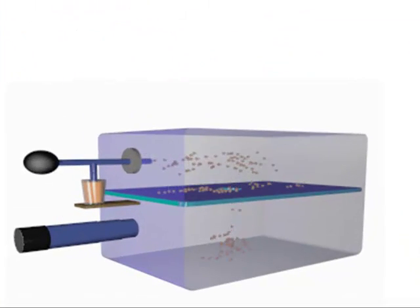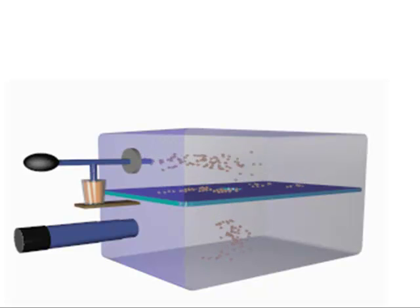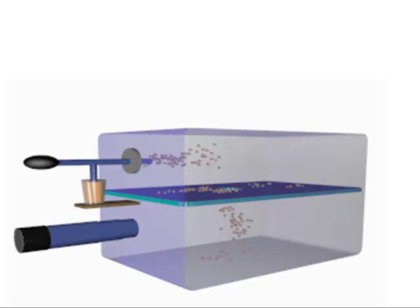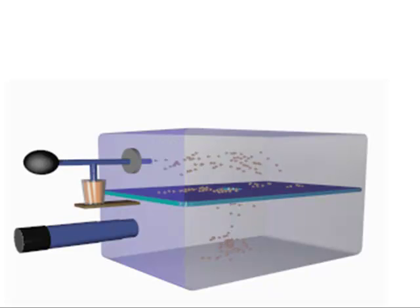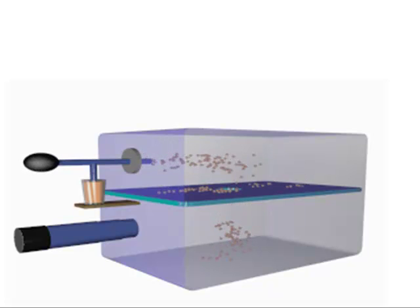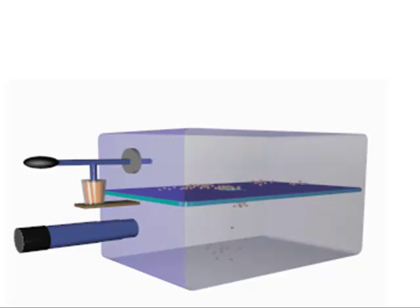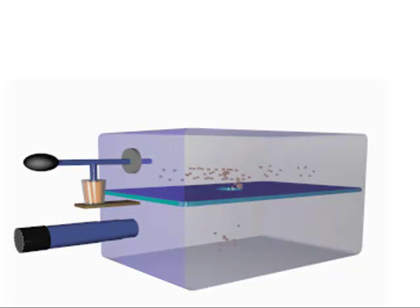Millikan's famous oil drop experiment allowed the charge on an electron to be measured independently from its mass. The basic idea is to charge oil drops with electrons and then apply an electric field to stop them from falling. From the balance of gravity and an applied electric field, the charge on the electron was determined.